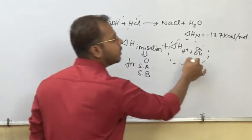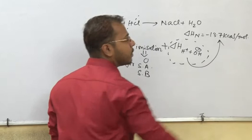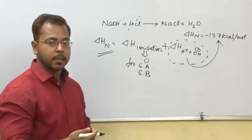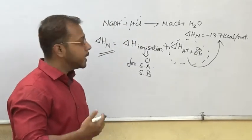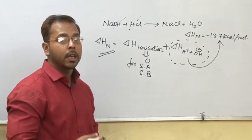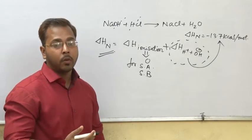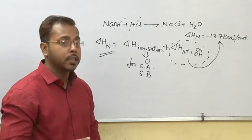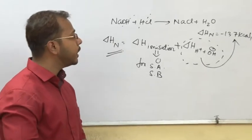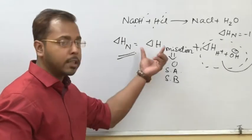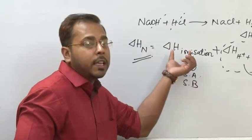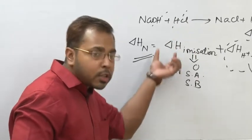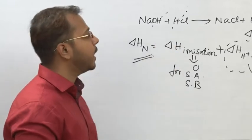For strong acid and strong base, the heat of neutralization equals minus 13.7 kilocalorie per mole. But for weak acids, they don't break down easily to form H+ and OH-, so we need to consider the ionization part. Some amount of heat must be provided to ionize those substances.